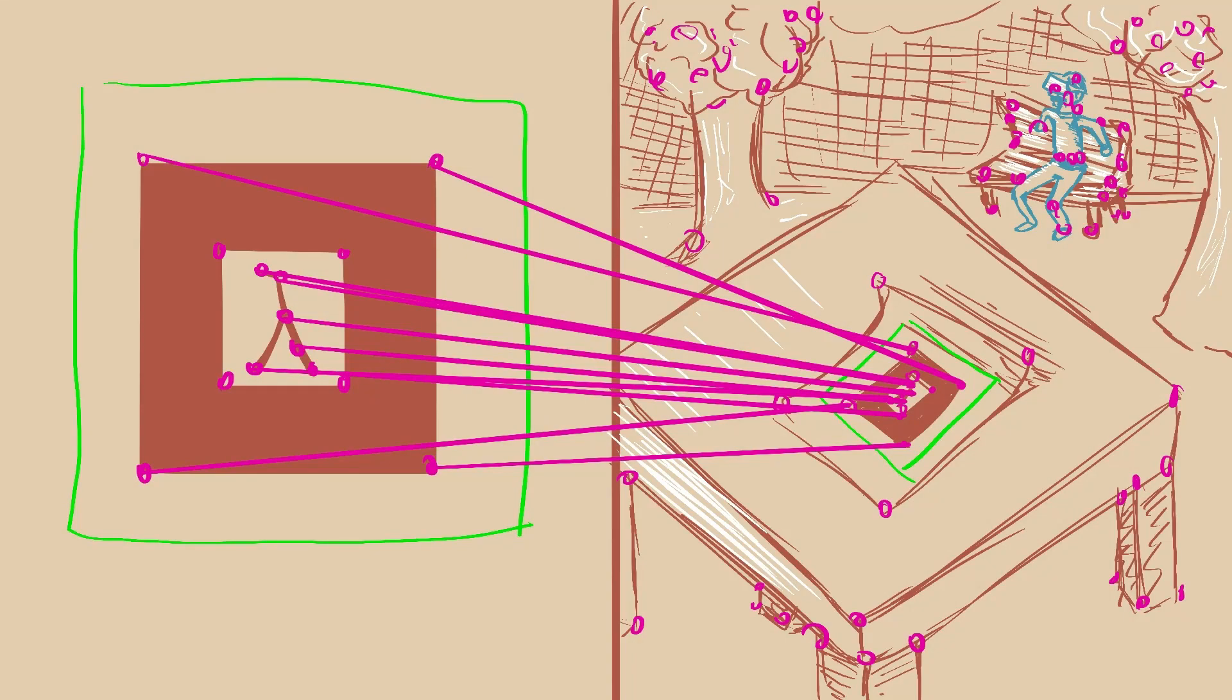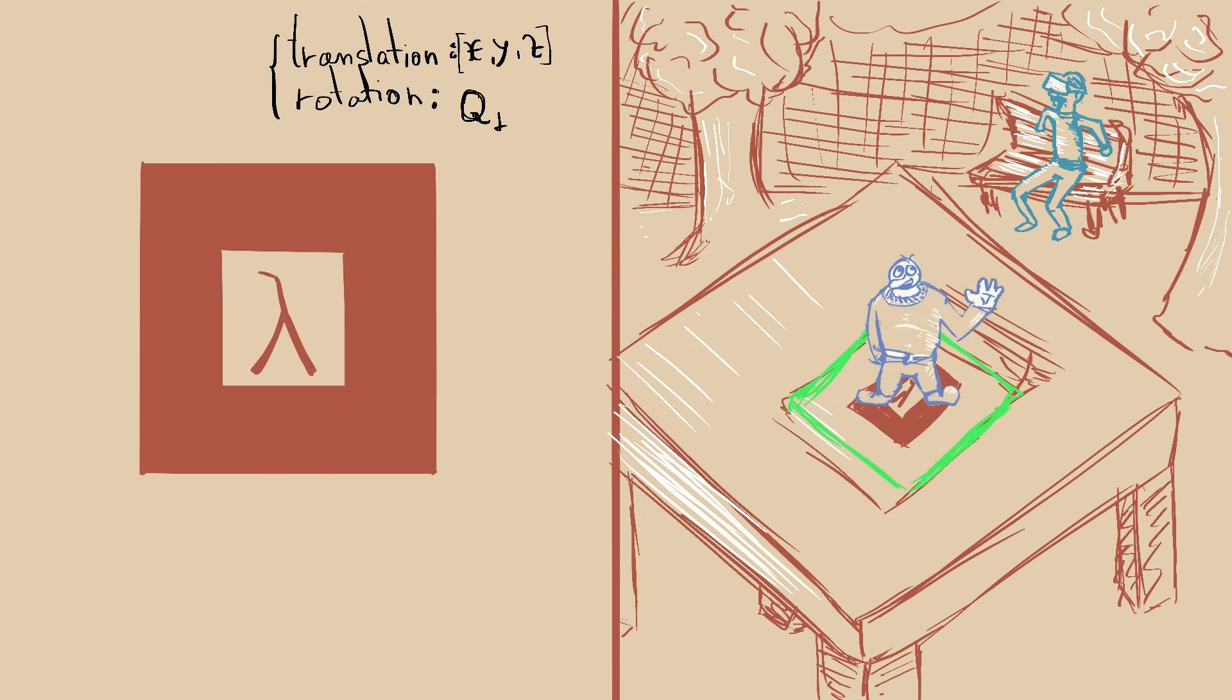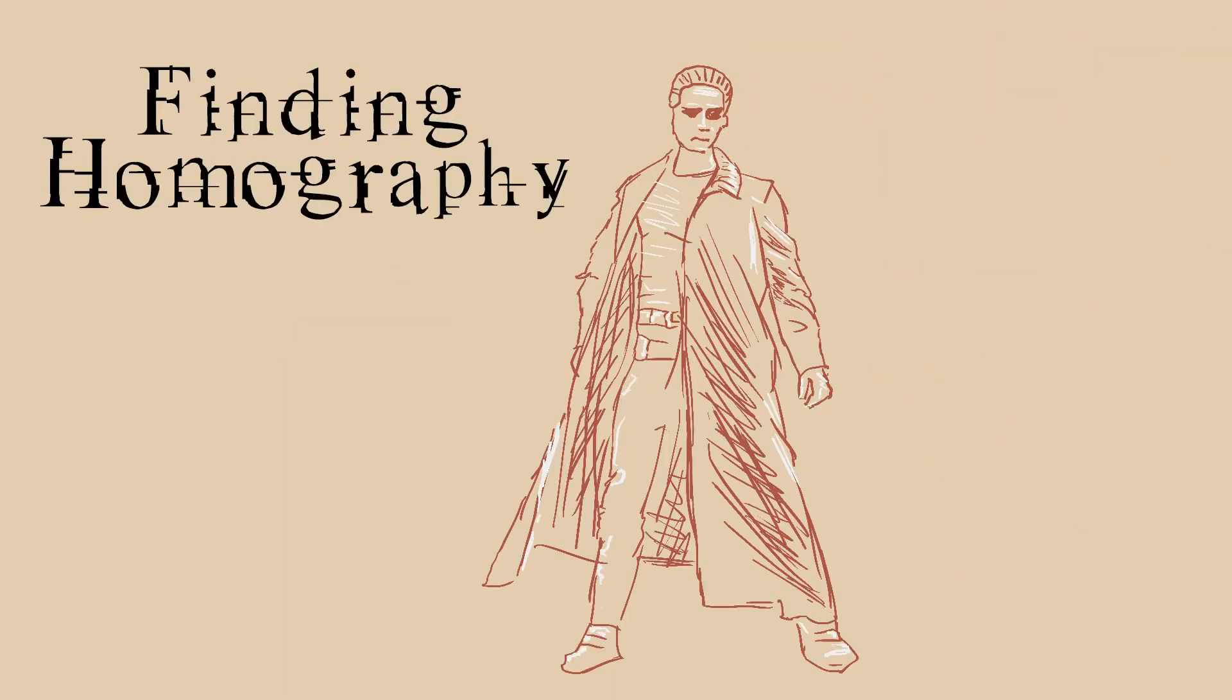Great. Now that we have a decently working matching algorithm, and we kinda know where our image should be, let's try to find out what position and rotation does our image have in the video. This is basically done through some matrix mathematics, and is the last piece of our puzzle.